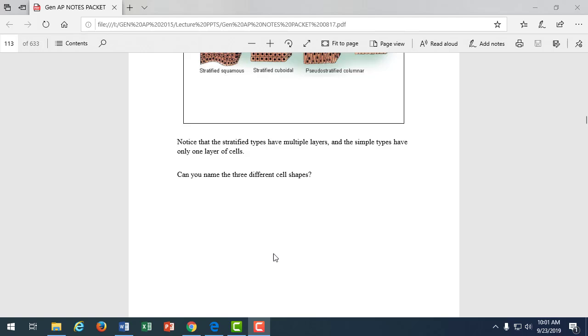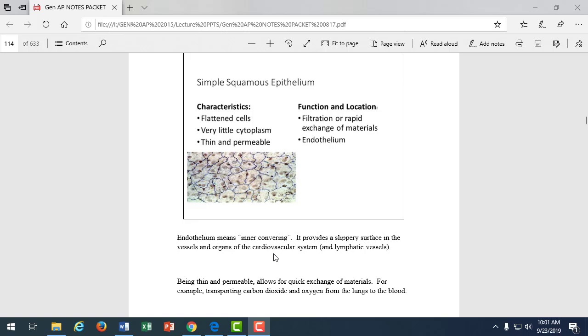Simple squamous epithelium: one layer of flattened cells. The benefit is we have rapid crossing of materials. If you had to jump over a brick wall that was one thin layer, it would be easy. But many layers, a very thick wall, would take a while. Same thing happens here. If we're trying to diffuse something from one area to another, say across the membrane of your air sacs of your lung, the alveoli, we want that to go quickly. Our tiniest blood vessels, our capillaries, are simple squamous. Our alveoli are simple squamous, so we have rapid exchange of gases to keep us going.